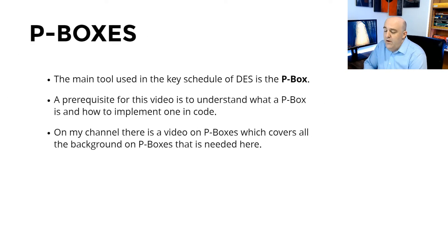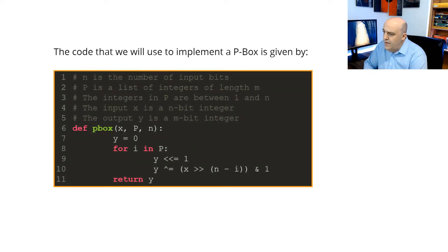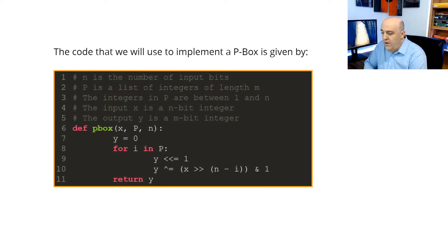The main object that's used in the Key Schedule is the P-box. Really the only objects used in the Key Schedule are P-boxes. So a prerequisite for this video is to know and understand what a P-box is and how to implement it in code. We're not going to explain that in this video, but I did explain it in a video on my channel called P-boxes in Cryptography. On that video, we explain this code right here.